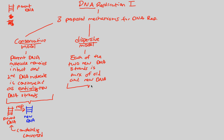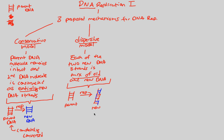I can draw this simply: starting with an original parent molecule, this replication process produces something weird — a piece that's red, then blue, then red again, mixing throughout. We end up with a very dispersed molecule, a molecule that's a mix of old and new. That's exactly what supposedly happens in the dispersive model. The new DNA is a mix of old and new. I'm going to tell you right now that this is the wrong model.